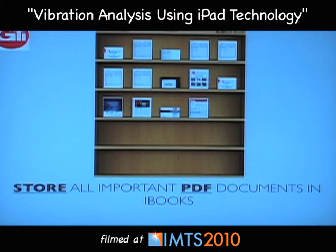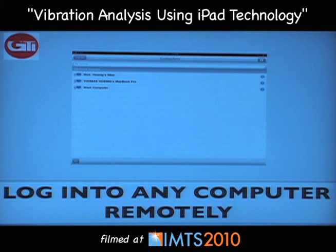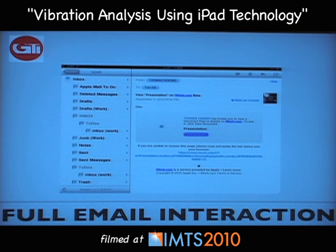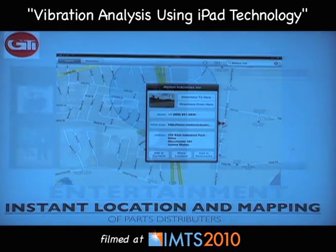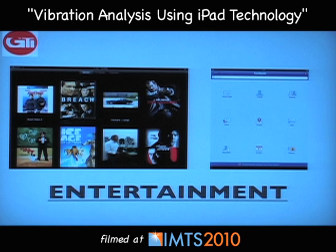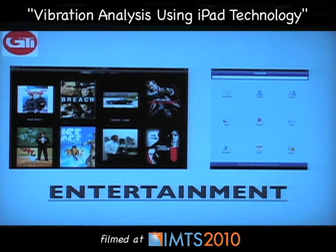All of your contacts are accessible in there, along with PDF files and iBooks — all your machine manuals are at your fingertips. You can go directly from the iPad and operate your computer remotely. Emailing is built in, so you don't have to go back to the office to send a critical email. Location is another important feature: if you need a part for a machine, you simply go to the map app, search for the nearest supplier such as Motion Industries, and find out where to get the part to get the machine up and running. This covers everything from A to Z, which is why GTI chose this device.